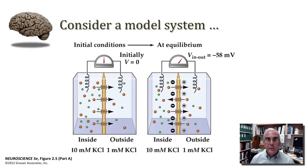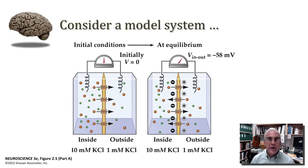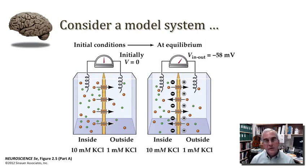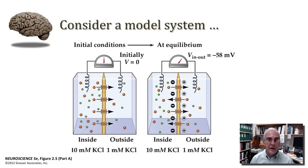This equilibrium is established very quickly, and what will happen at equilibrium is that an electrical potential will become established across that membrane with a predictable magnitude. In this case, the potential has a magnitude of 58 millivolts, with compartment one on the left-hand side being 58 millivolts negative to compartment two on the right-hand side.